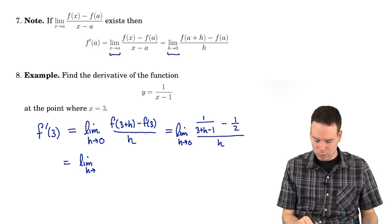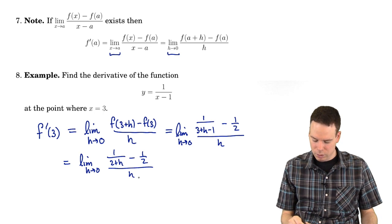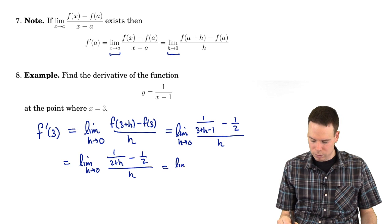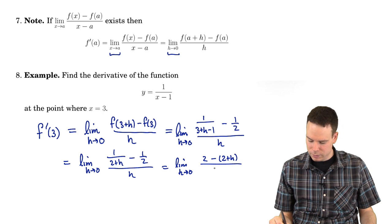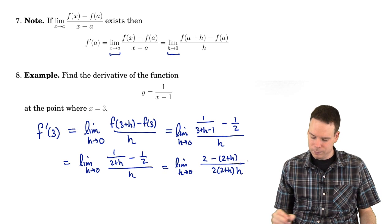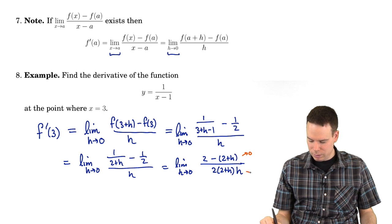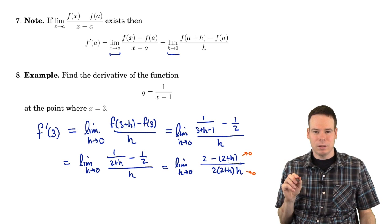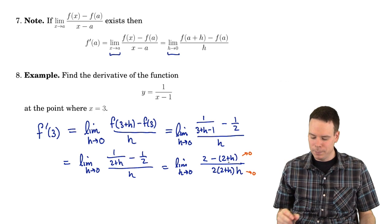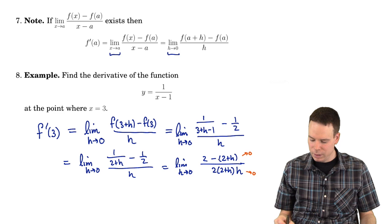This simplifies to 1 over (2 + h) minus 1 half, all over h. Putting the numerator over a common denominator — the common denominator is 2 times (2 + h) — we get 2 minus (2 + h) over 2(2 + h), with the factor of h still in the denominator. This is a 0 over 0 limit. Plugging in h = 0 gives 0 on top and 0 on the bottom, so there's more work to do. The 2's in the numerator cancel off, leaving negative h over 2(2 + h) times h.